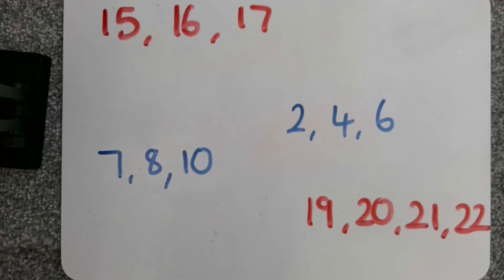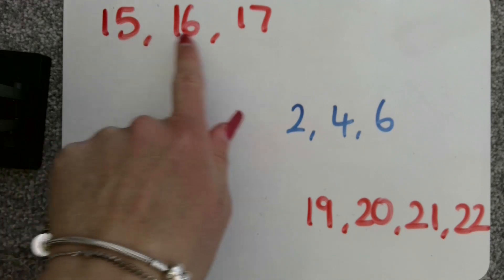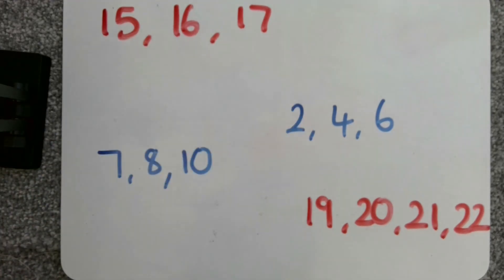Here are four different number sequences. Fifteen, sixteen, seventeen, two, four, six, nineteen, twenty, twenty-one, twenty-two, and seven, eight, and ten.